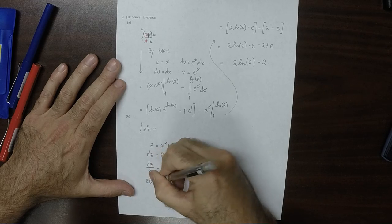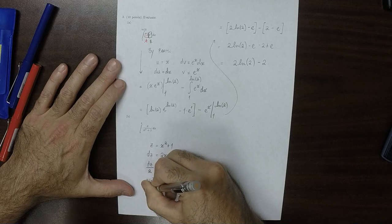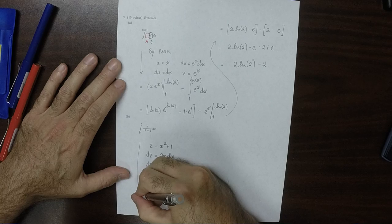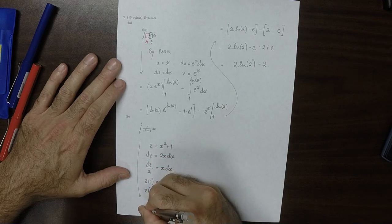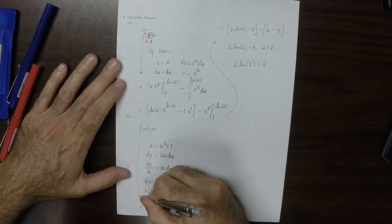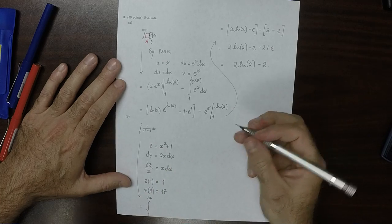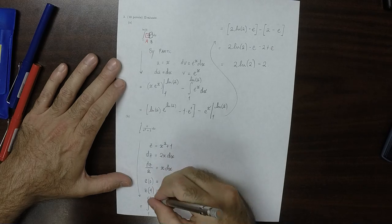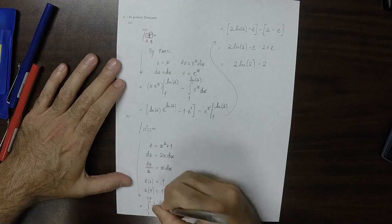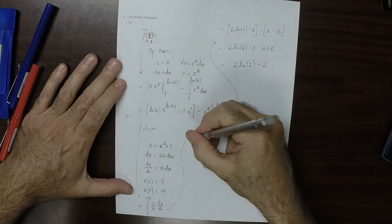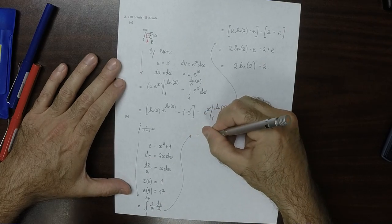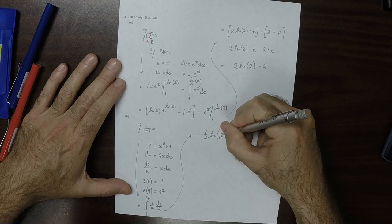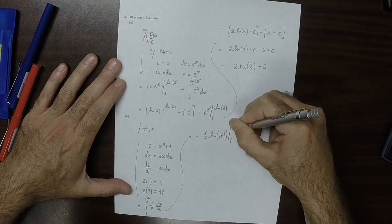I'll go ahead and change the limits. z evaluated at 0 is 1 and z evaluated at 4 is 17. So making that substitution, the new integral is 1 to 17 of 1 over z times dz over 2. Well, that half can just be factored out, and this is half the natural log of the absolute value of z from 1 to 17.